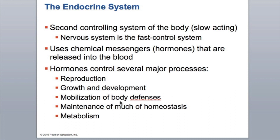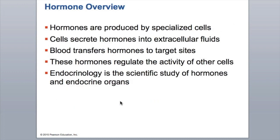They control major processes such as reproduction, growth and development, body defenses, homeostasis, and metabolism. Hormones are produced by specialized cells in the endocrine system. Cells secrete these hormones into the extracellular fluids, which then transfuse into the blood. They travel through the body and react with receptors at target sites, regulating the activity of other cells.